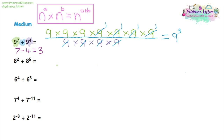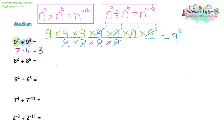Now we can use what we've worked out to draw a second rule: if we have two indices divided by each other, the answer indices are going to be subtracted from each other. So for our next one, we have eight to the two divided by eight to the five. Using our rule, that's two minus five, which gives us minus three. So the answer to this question is eight to the power of minus three.